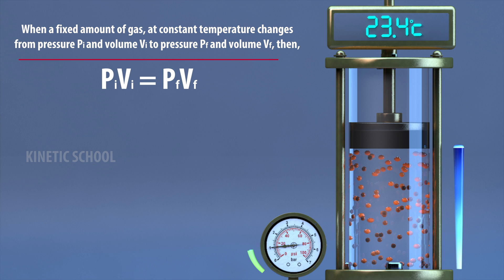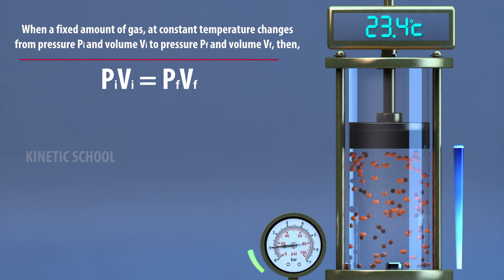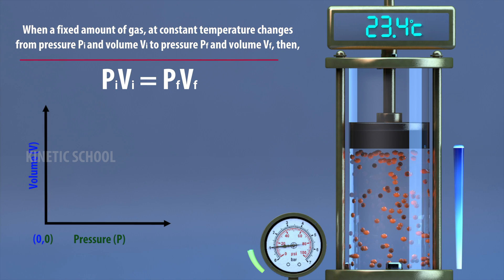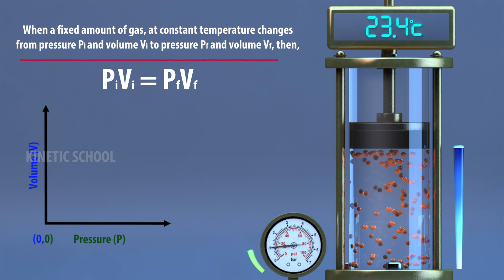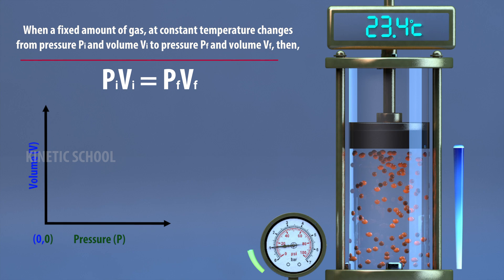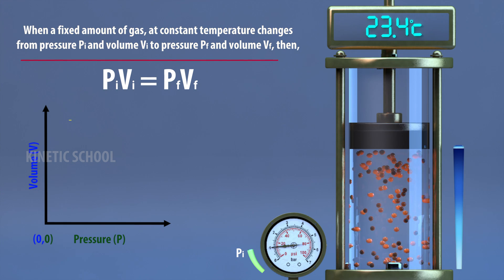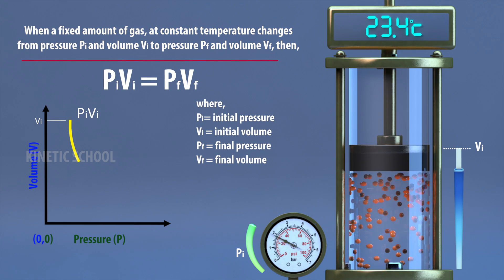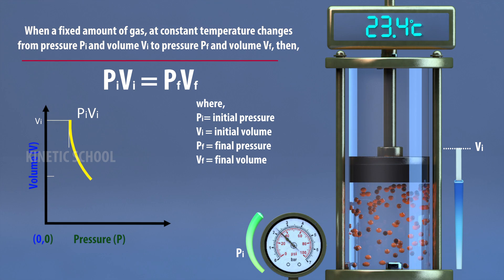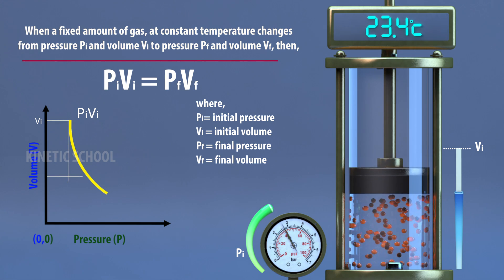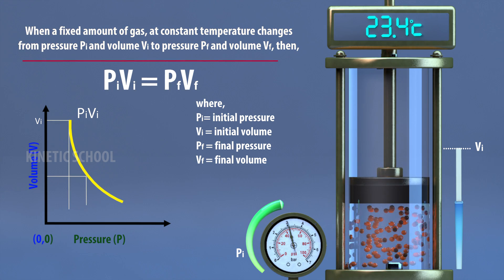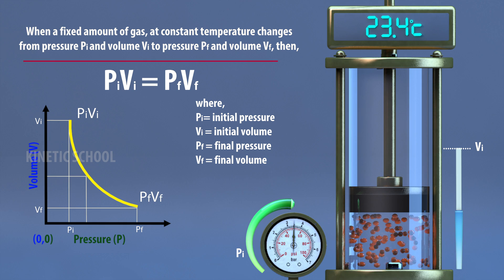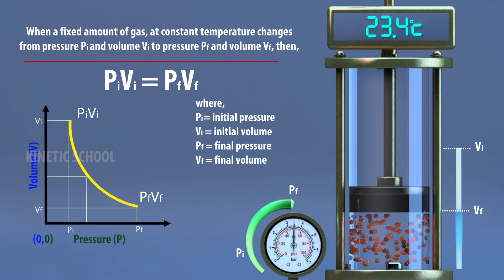When a fixed amount of gas at constant temperature changes from initial pressure P-initial and volume V-initial, to final pressure P-final and volume V-final, then the product of P-initial and V-initial is equal to the product of P-final and V-final.